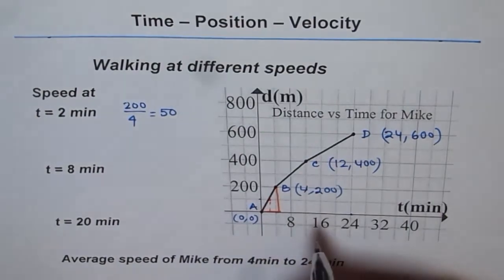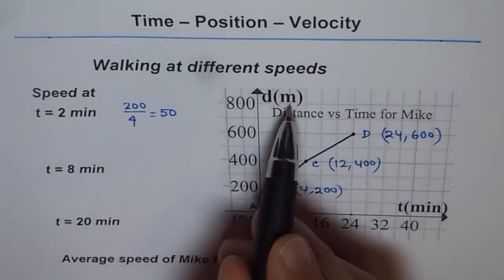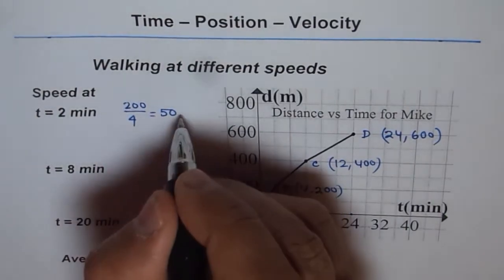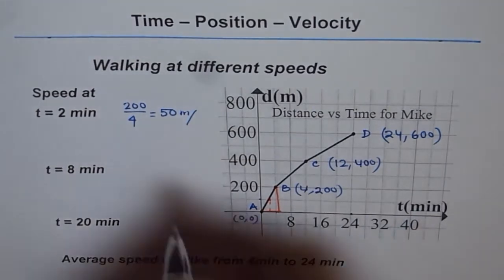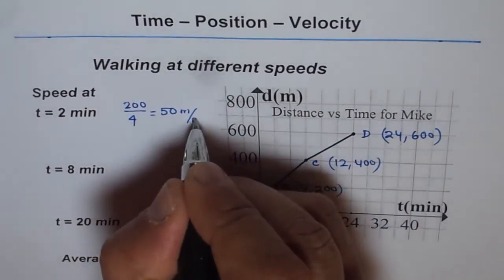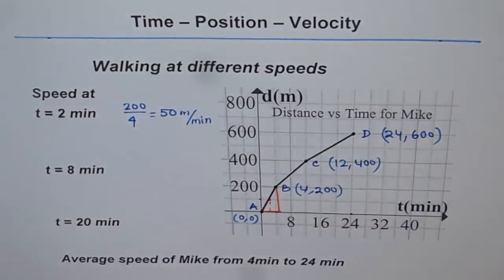So speed = 200 divided by 4 = 50 meters per minute. The units are meters for distance and minutes for time, giving 50 meters per minute.